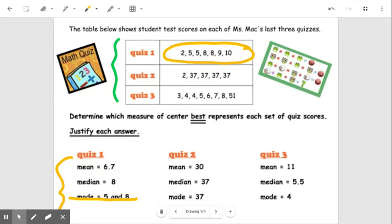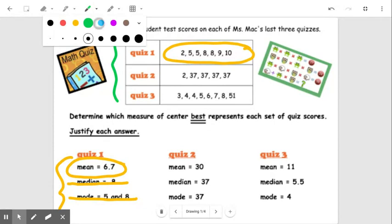And the 10 is pretty close, but because the two is so much farther away than the 10, I probably would not choose median. I would probably choose mean because the distance from 6.7 down to two and 6.7 up to 10 is a little bit more evenly spread out. So that's what I would choose for quiz number one.